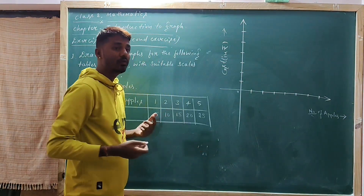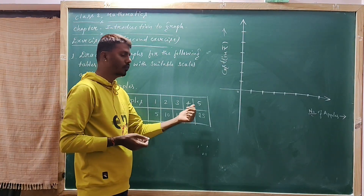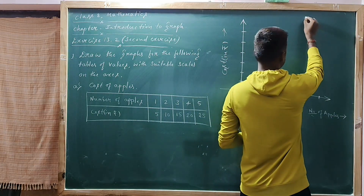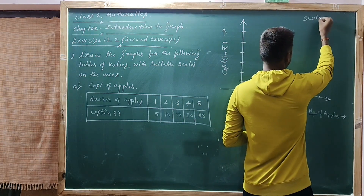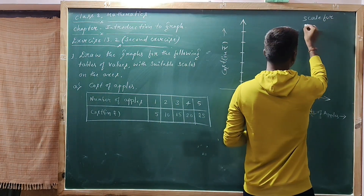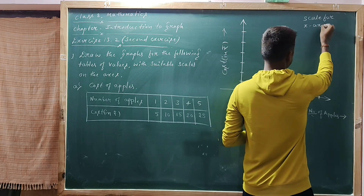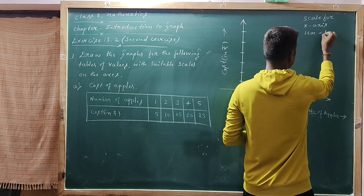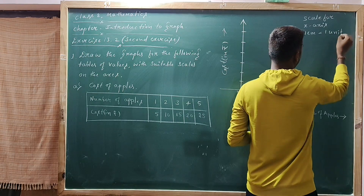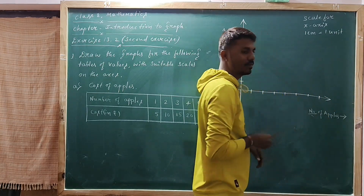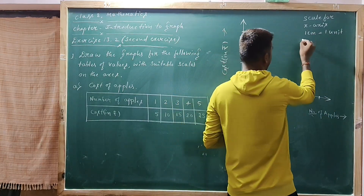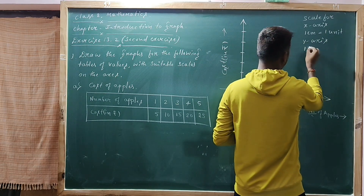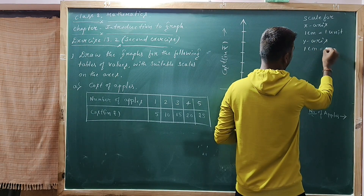So what is the scale for the x-axis? Observe here: 1, 2, 3, 4, 5. Choose the scale. Scale for x-axis: 1 centimeter is equal to 1 unit. Similarly for the y-axis, 1 centimeter is equal to 5 units.